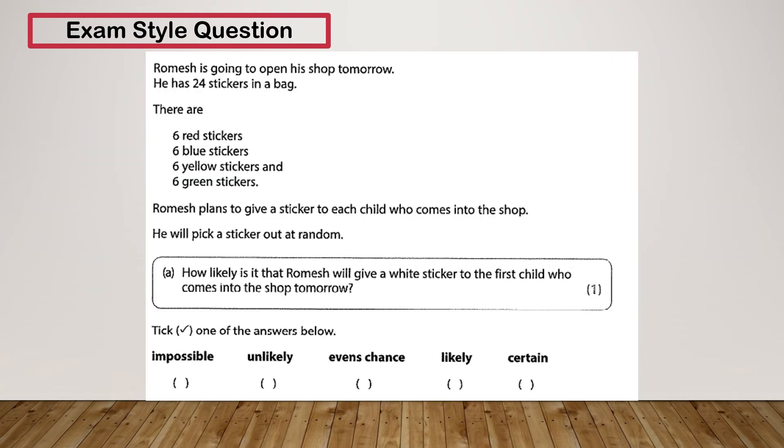Let's have a look at another one. Ramesh is going to open his shop tomorrow. He has 24 stickers in a bag: six red, six blue, six yellow, and six green. Ramesh plans to give a sticker to each child who comes in the shop. He will pick a sticker at random. How likely is it that Ramesh will give a white sticker to the first child who enters the shop? Now we've got six red, six blue, six yellow, and six green, but we don't have any white stickers. So therefore it's impossible that Ramesh is going to give a white sticker.